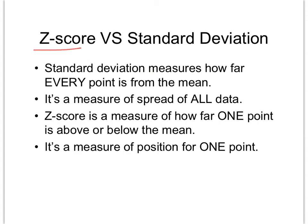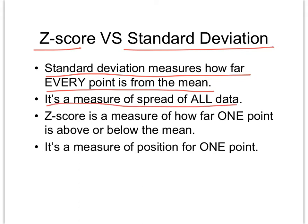Z-score versus standard deviation: the standard deviation measures how far away every data point is from the mean. We're looking at every individual data point and seeing in total how far the data points are from the mean. It's a measure of all the data.